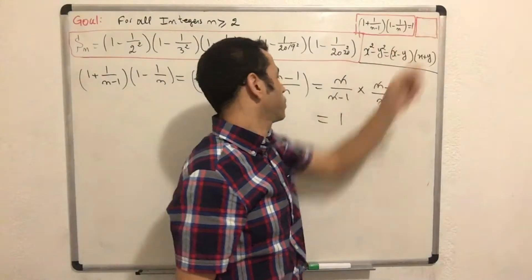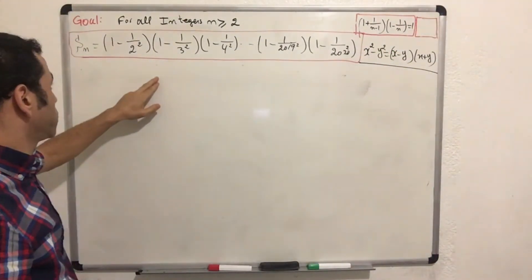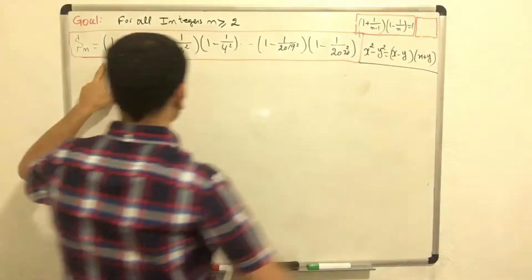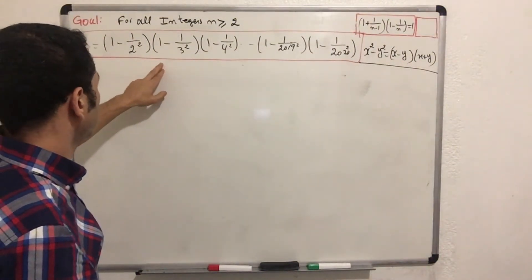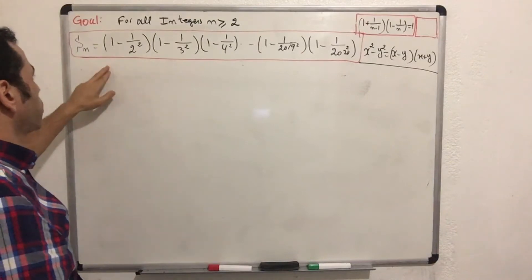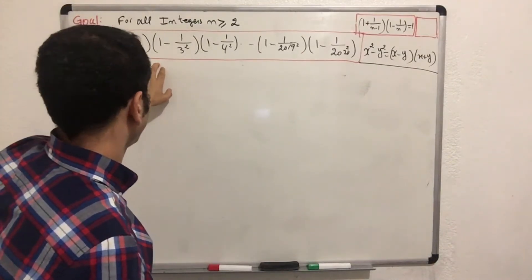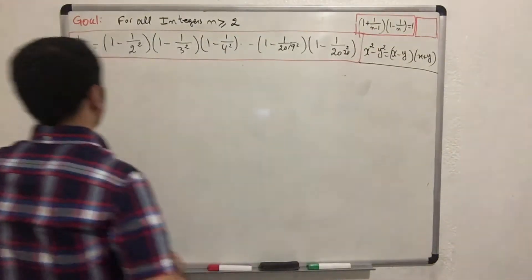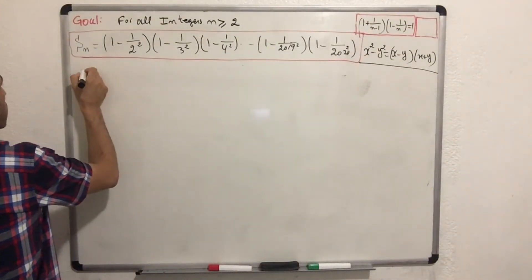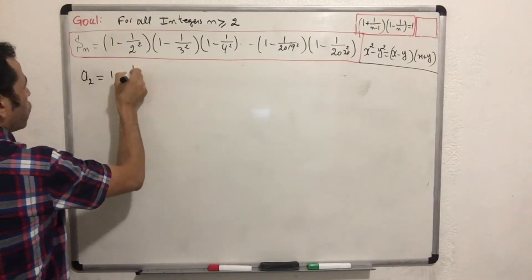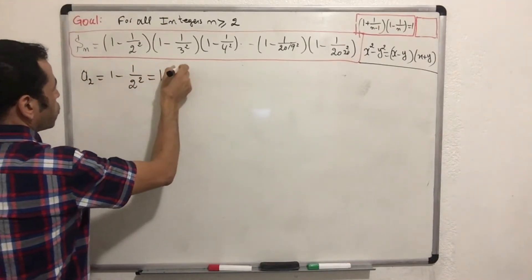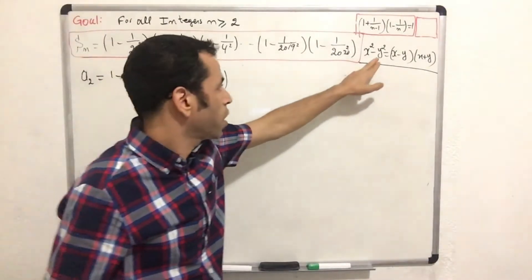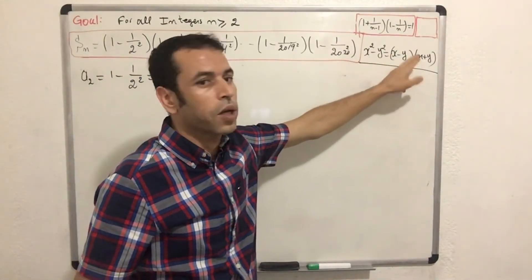This identity is now verified. In the next step, I'm going to write down this product in a new form by isolating every single term and multiplying every two terms together to get this form. I'll use the difference of squares identity: x squared minus y squared equals x minus y, multiplied by x plus y.